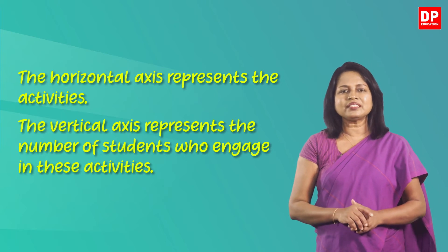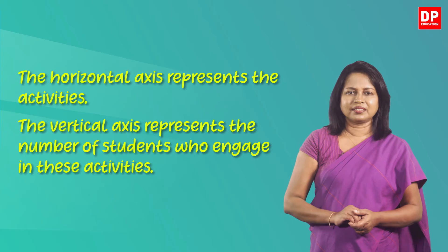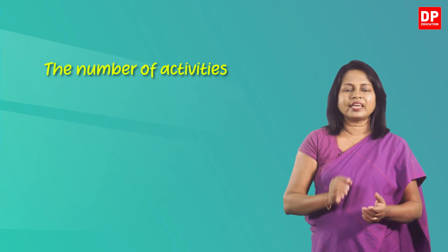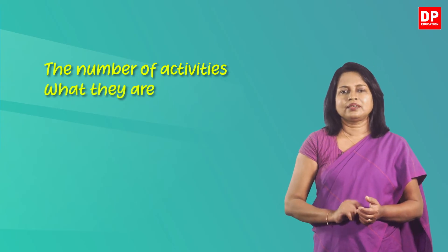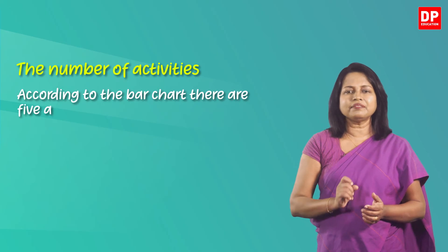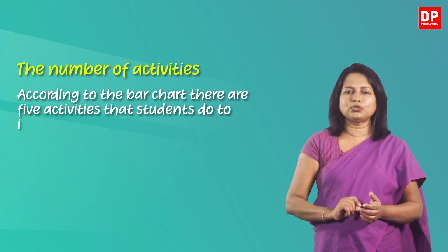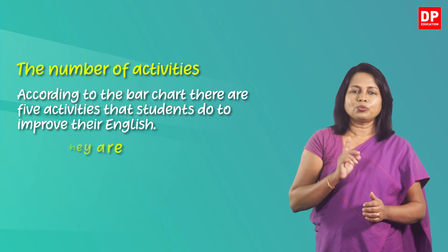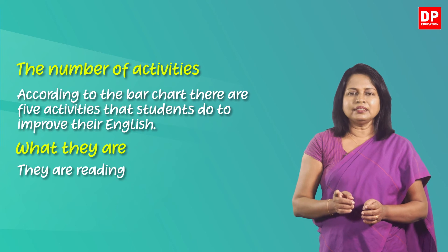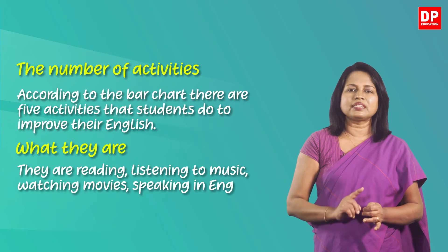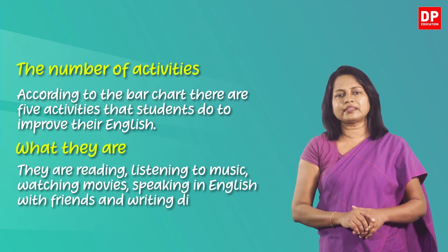Next you can write an overall description like this. You have to first give the number of activities in the chart and then name what they are. Look at this example: 'There are five activities that students do to improve their English. They are reading, listening to music, watching movies, speaking in English with friends, and writing diary entries.'